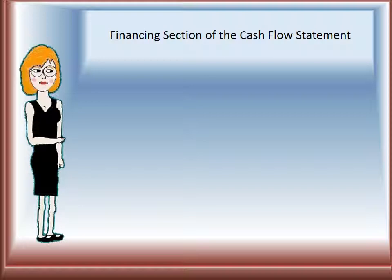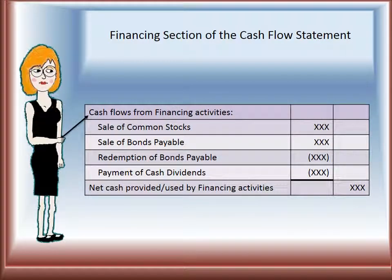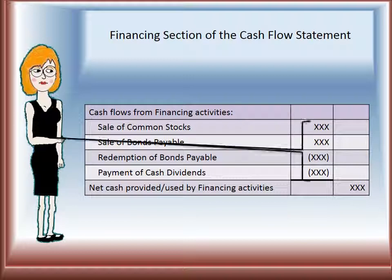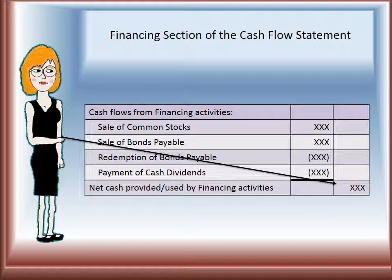Finally is the financing section of the cash flow statement. We would have the header of cash flows from financing activities. We would add sales of common stock because that brings money in, and sales of bonds payable, which would also bring money in. We would subtract redemption of bonds payable, payment of cash dividends, and on rare occasions the purchase of our own common stock, which we refer to as treasury stock. We would then add the positives and subtract the negatives to get the net cash either provided or used by financing activities, placing that amount in the right-hand column with subtotals one column to the left.